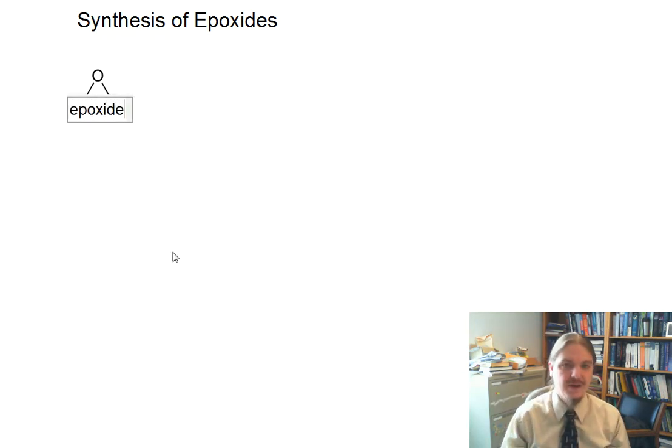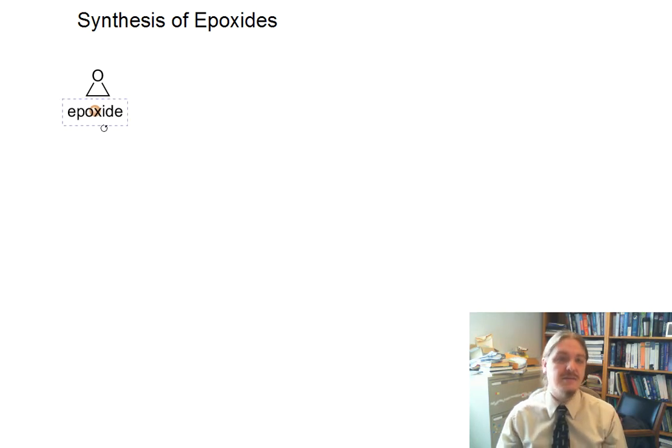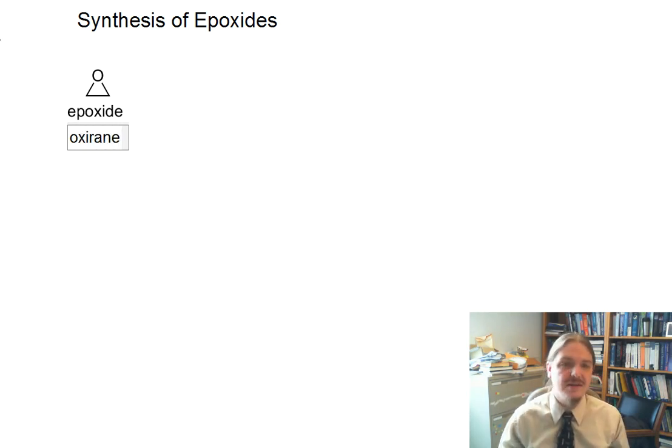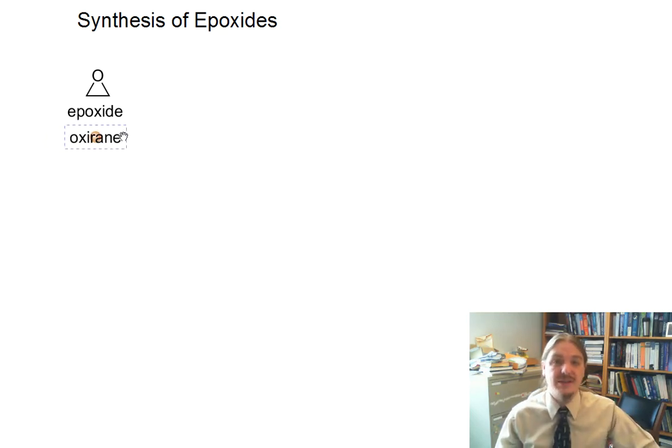So an epoxide is a three-membered ring cyclic ether, and most people use epoxide for the name of this functional group. But just so you know, it has a different name that you will sometimes see. The formal IUPAC name of this molecule, the simplest epoxide,